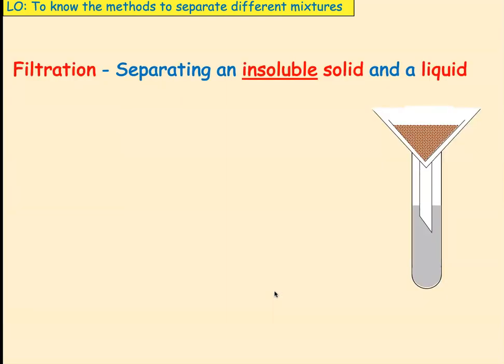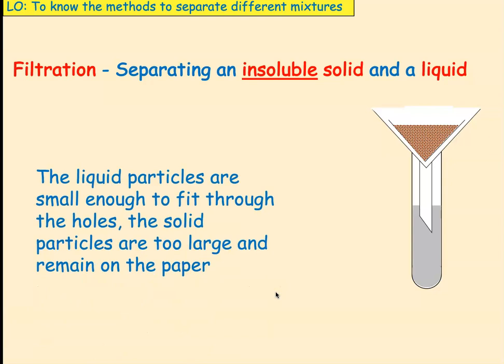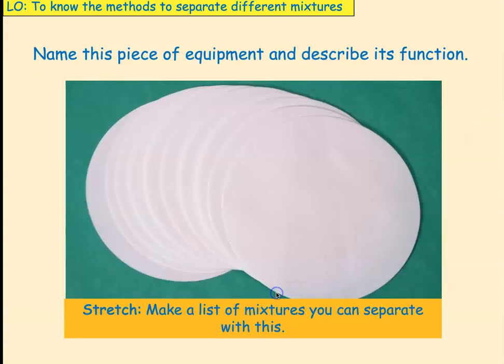Okay, let's start with the first separating technique. Filtration is used to separate an insoluble solid and a liquid. And we use this equipment. The liquid particles are small enough to fit through the holes in the filter paper. But the solid particles are too large and they remain on the paper. We have to use a filter funnel and filter paper. So this is filter paper. We have to be able to fold it into the funnel. And we can use that to separate an insoluble solid from a liquid.